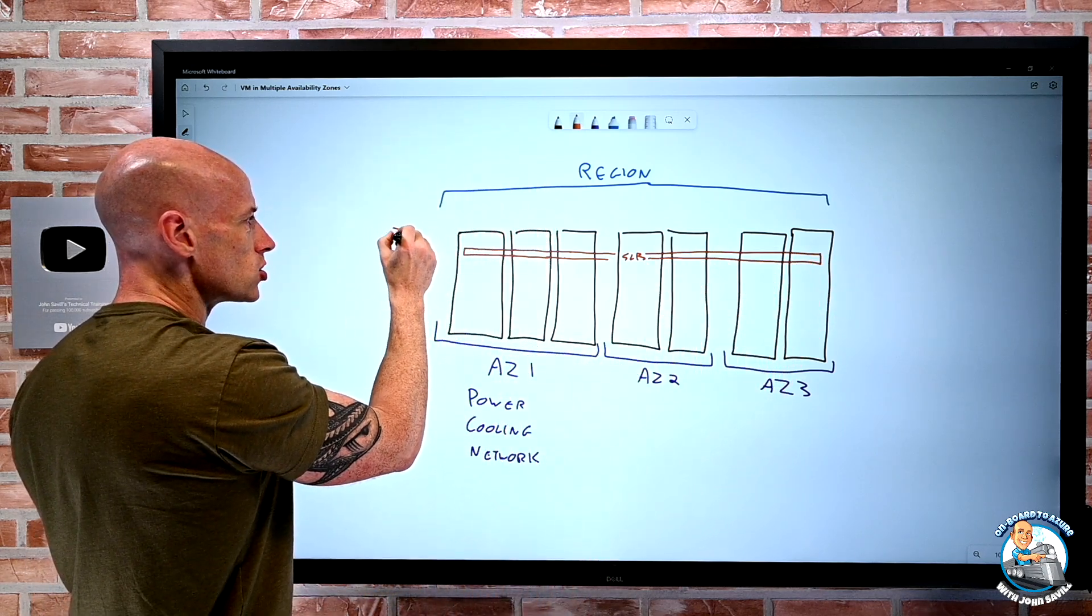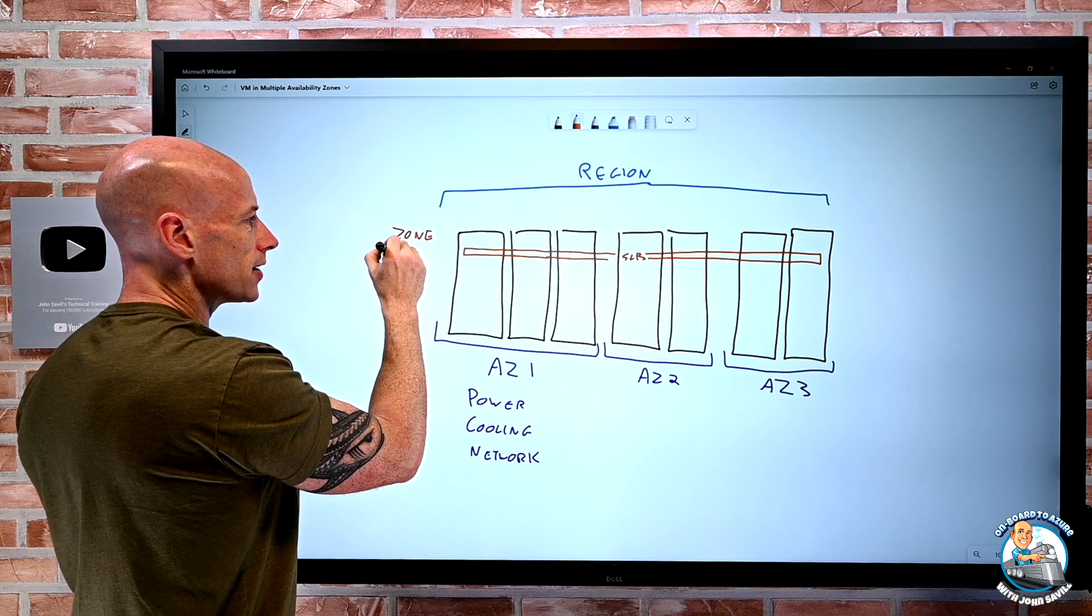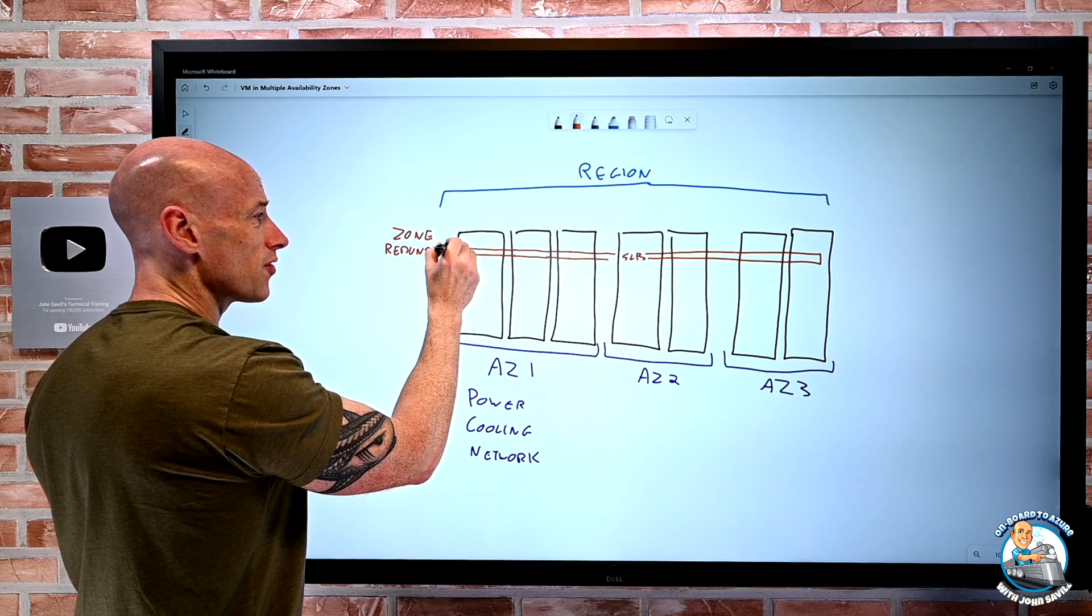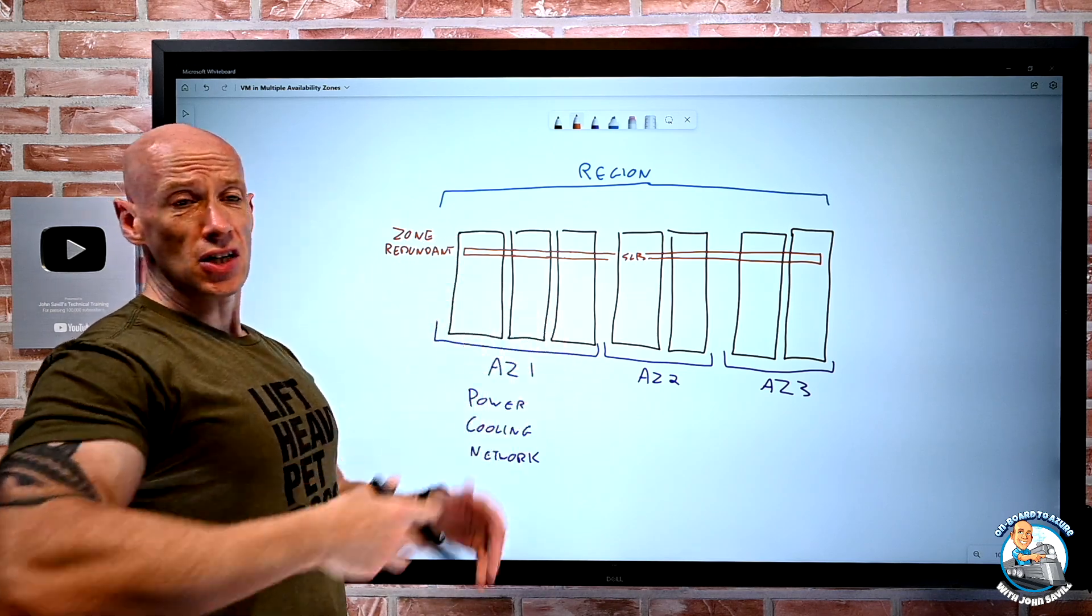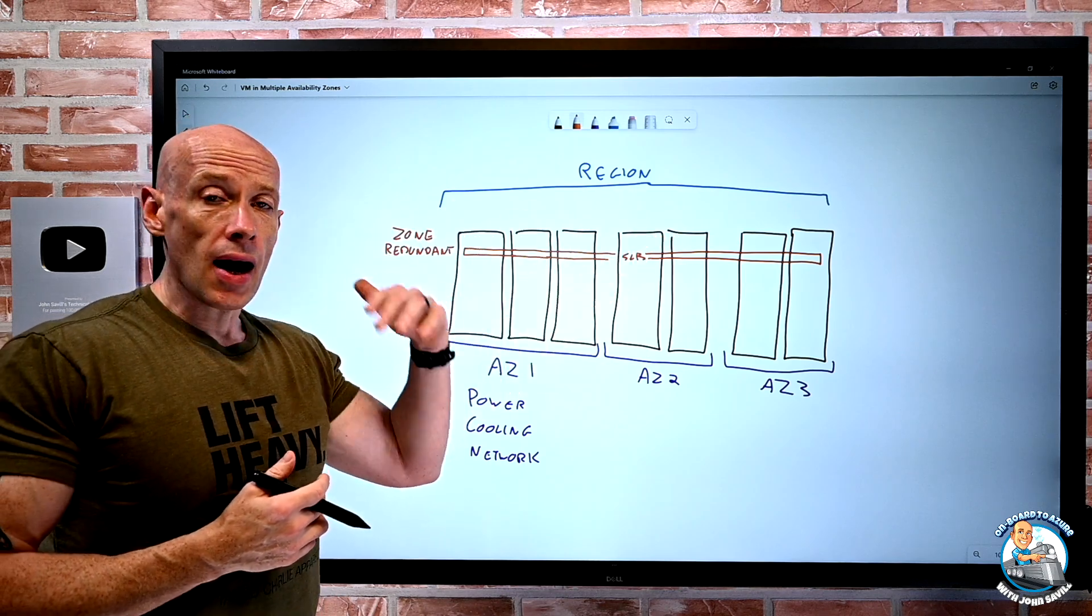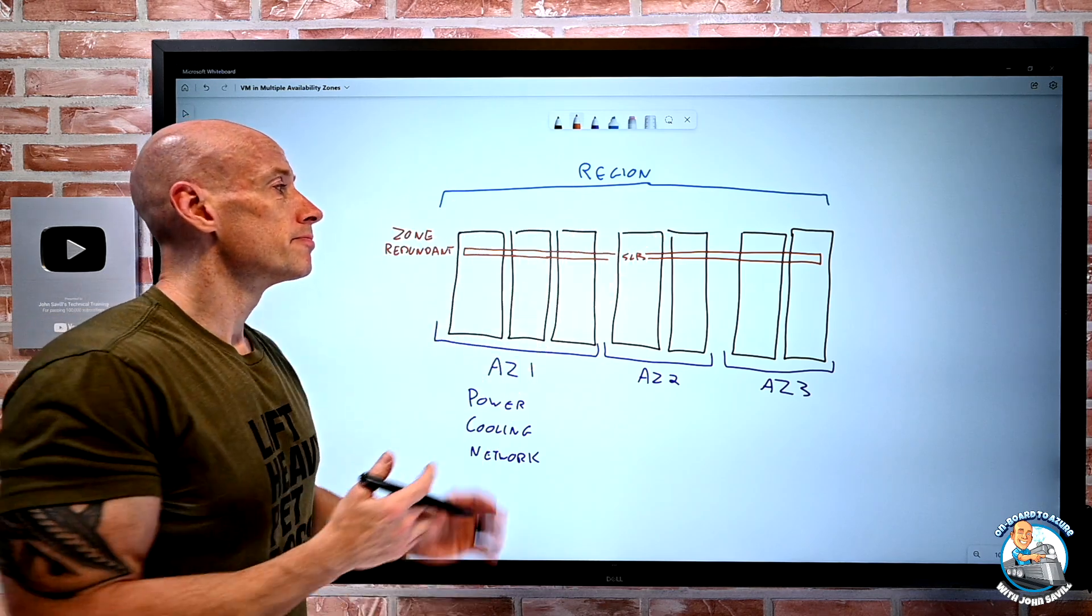There's nothing I have to do other than say, hey, I want it to be zone redundant. Public IPs, I can create a zone redundant. SLB, great.